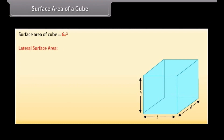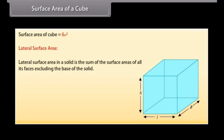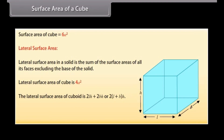Lateral surface area. In a solid, the lateral surface area is the sum of the surface areas of all its faces excluding the base. The lateral surface area of a cube is 4A², and the lateral surface area of a cuboid is 2LH + 2BH, or 2(L + B)H.